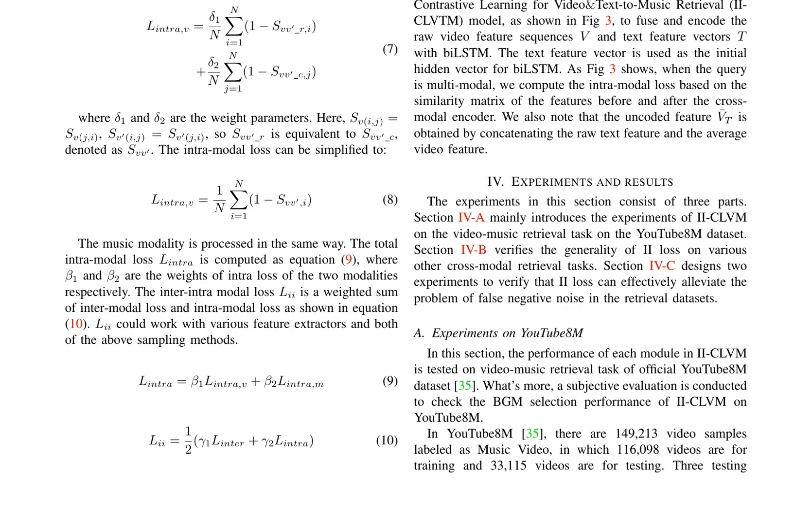Experiments are conducted on the YouTube 8M dataset to evaluate the performance of IICLVM on video music retrieval tasks. The results demonstrate the effectiveness of IICLVM in retrieving music for videos. Additionally, the generality of the II loss function is verified on various other cross-modal retrieval tasks, and experiments are designed to verify that II loss can effectively alleviate the problem of false negative noise in the retrieval datasets.